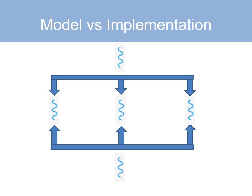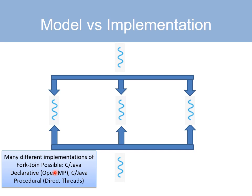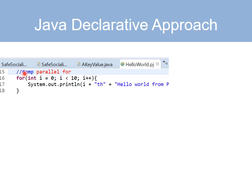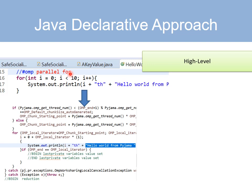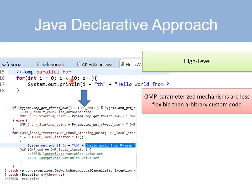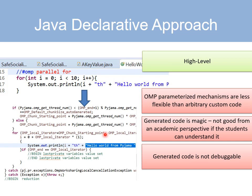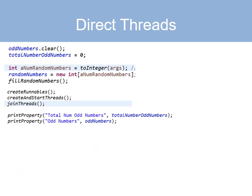The fork-join model as described can be implemented in multiple languages, and more importantly, can be implemented declaratively in an OpenMP style or procedurally by using thread abstractions directly. Here's an example of the declarative style using Pyjama. An annotation is given to specify the concurrency requirements, processed by a preprocessor that uses the underlying threads directly. The advantage is that it's high level, but there are disadvantages: parameterization reduces flexibility, the generator code is magic, and since this code is not written by us, we can't debug it. Because of these disadvantages, our current testing framework addresses direct use of threads.